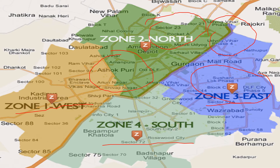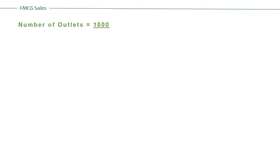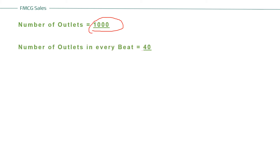So, how many sales officers are required in this territory to serve all these beats? Let's assume there are 1,000 outlets in that territory. The number of outlets per beat is taken as 40 — this is the generic norm in FMCG. So, the number of beats would be 1,000 divided by 40, which equals 25.